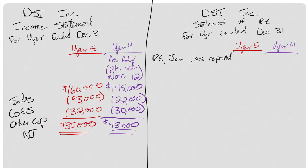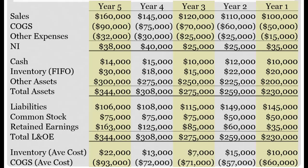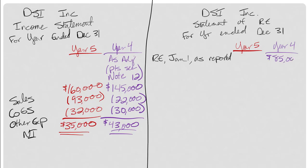The first line item in a statement of retained earnings is retained earnings January 1 as reported. In this case I would use the original beginning retained earnings number for year four. We always go back and do the adjusted year first. Year four beginning retained earnings we find right here in year three. The $85,000 is what I ended with in year three, so that's the number that was reported as beginning retained earnings.